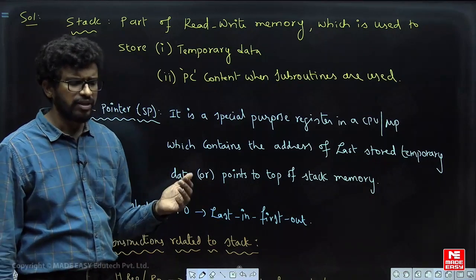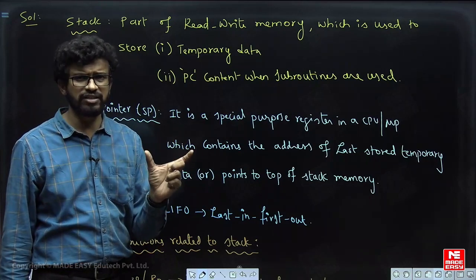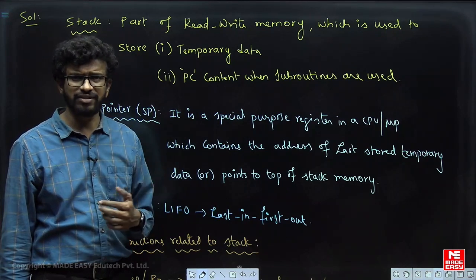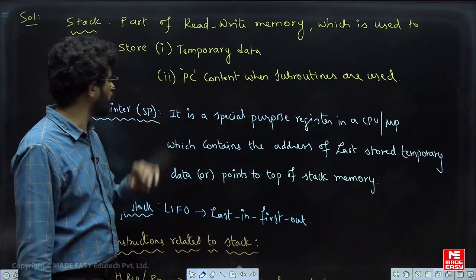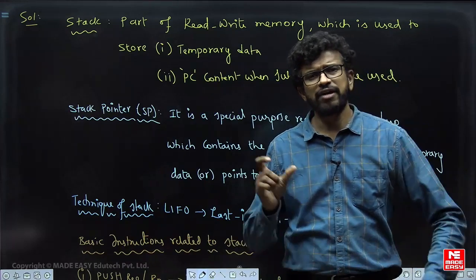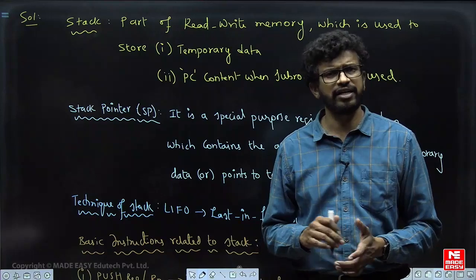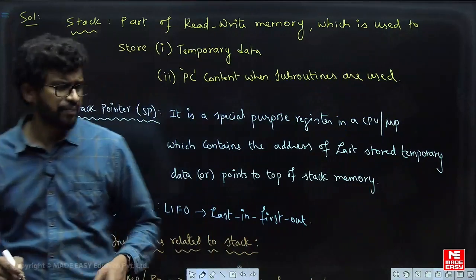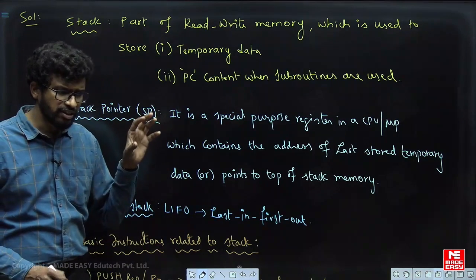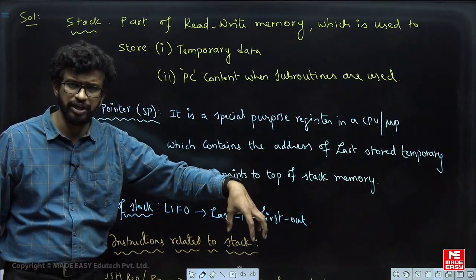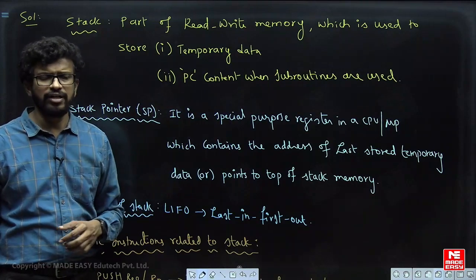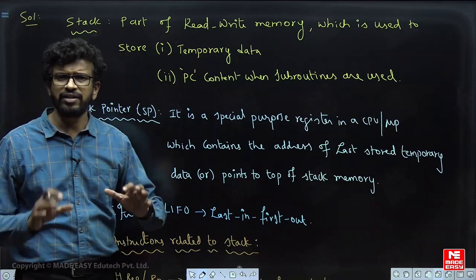Depending on the processor, the stack pointer register length can be different — for example, 16 bits for the 8085 or 8086, or 8 bits for some microcontrollers. The technique of stack is called Last In First Out (LIFO): whichever temporary data is last stored into the stack memory will come out first when a POP instruction is executed.